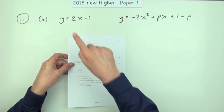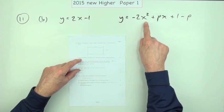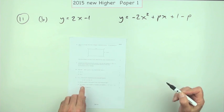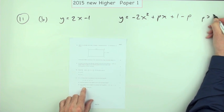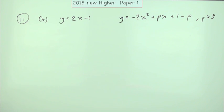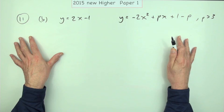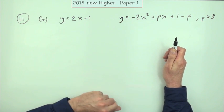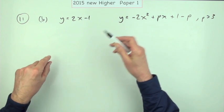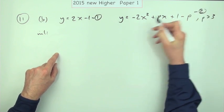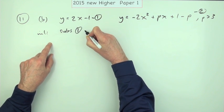Now part B: this tangent is also a tangent to the parabola with this equation. There's an additional condition — p is greater than 3. Determine the value of p for 6 marks. The standard approach is: if that line is a tangent to this parabola, then there should be one point of intersection. So go ahead and find the intersection. Call the tangent equation 1 and the parabola equation 2. To find the intersection, substitute one into the other.